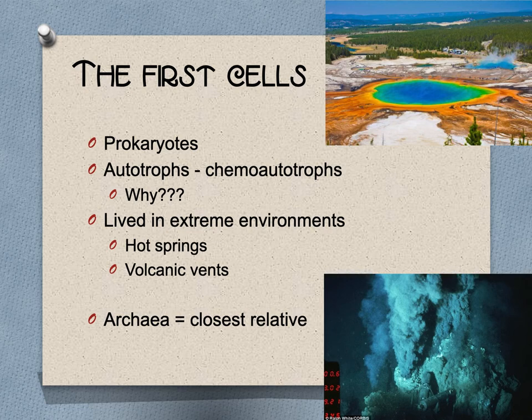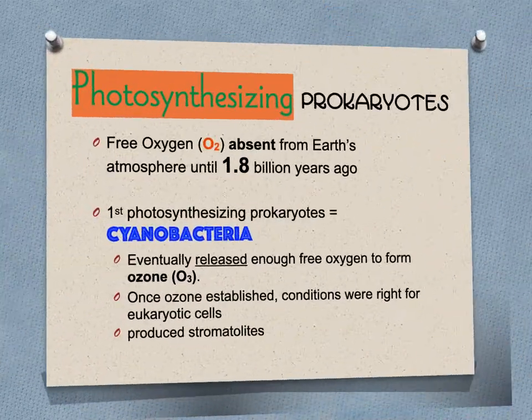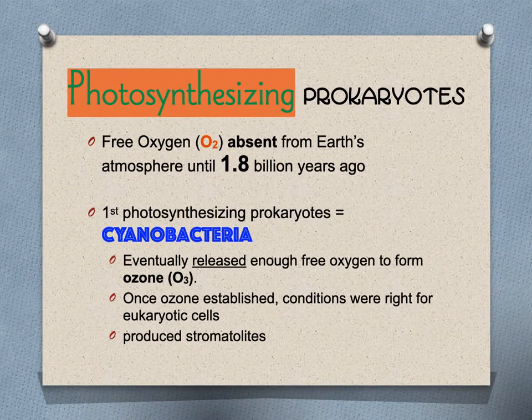The Archaea group of bacteria are the closest living relatives to those early cells. You can find them in places like early Earth — really hot and with no free oxygen. Great examples include Yellowstone and the thermal vents at the bottom of the ocean. Photosynthesizing prokaryotes did not arise until about 1.8 billion years ago.